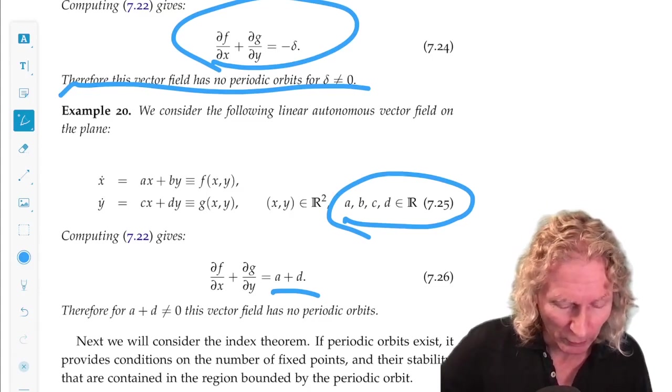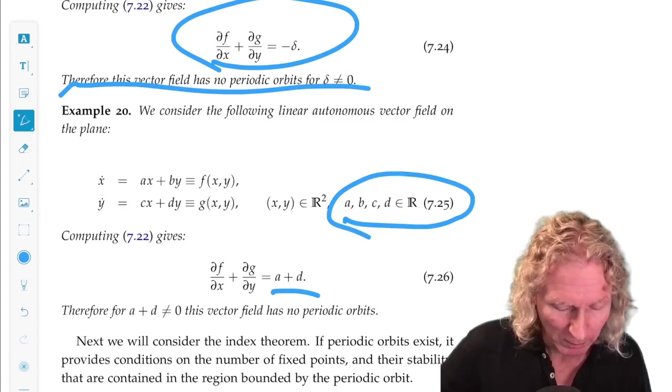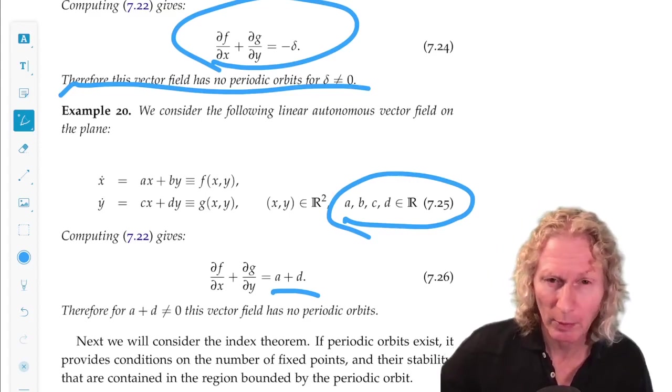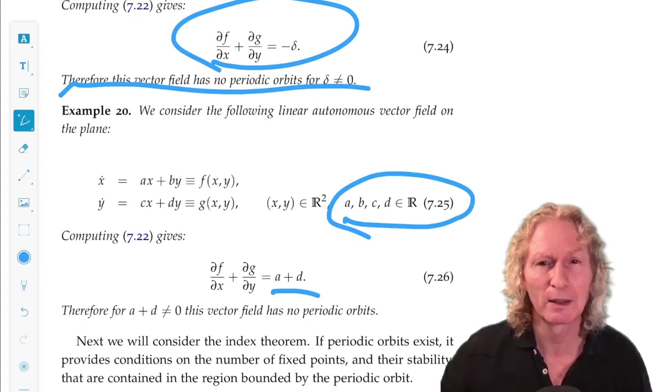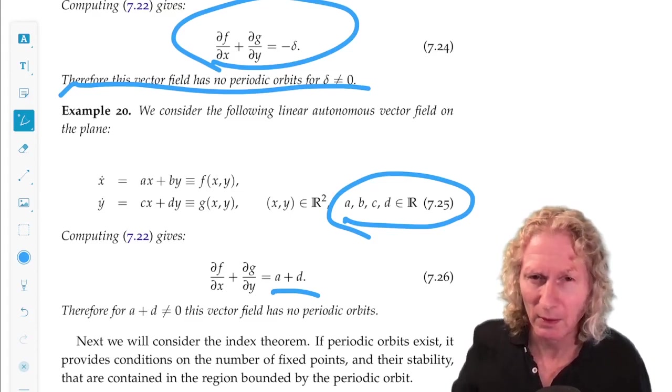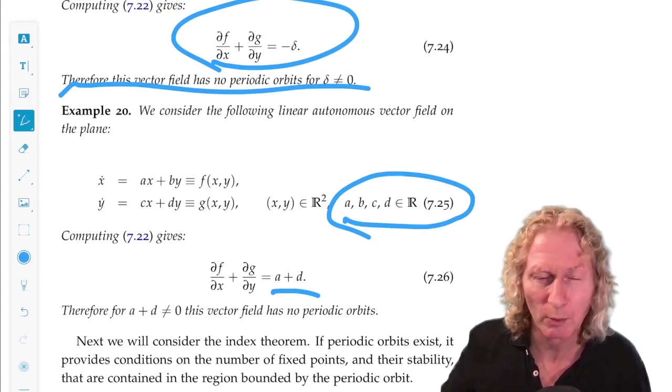The matrix associated with the linearization is the obvious matrix. A, B, C, D. And you can compute the eigenvalues of that with that handy little formula in Appendix A. And you can see what the relation may mean.